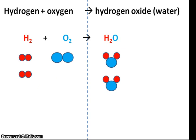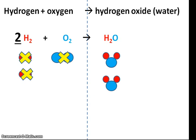Now I'm going to count how many lots of each element I have. I have two lots of hydrogen molecules, so before the hydrogen symbol here I'm going to write a big two. I have one lot of oxygen atoms, so I could write a one here, but I'm going to leave it blank. And finally, I have two molecules of water, so before the symbol for water I'm going to add a big two. This is the balanced symbol equation.